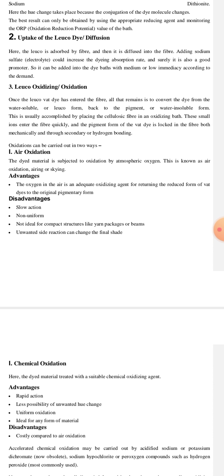The type of oxidations can be carried out in two ways. It can be either air oxidation or chemical oxidation. In air oxidation, simply the dye material is subjected to atmospheric oxygen. This is known as air oxidation, airing or skying. The advantage of this process is that air is present in adequate amount. But it leads to various disadvantages, which include slow action process, non-uniform dyeing, and air is also not ideal for compact structures like yarn packages or beams. If we use air as an oxidizing agent, unwanted side reactions can change the final shade.